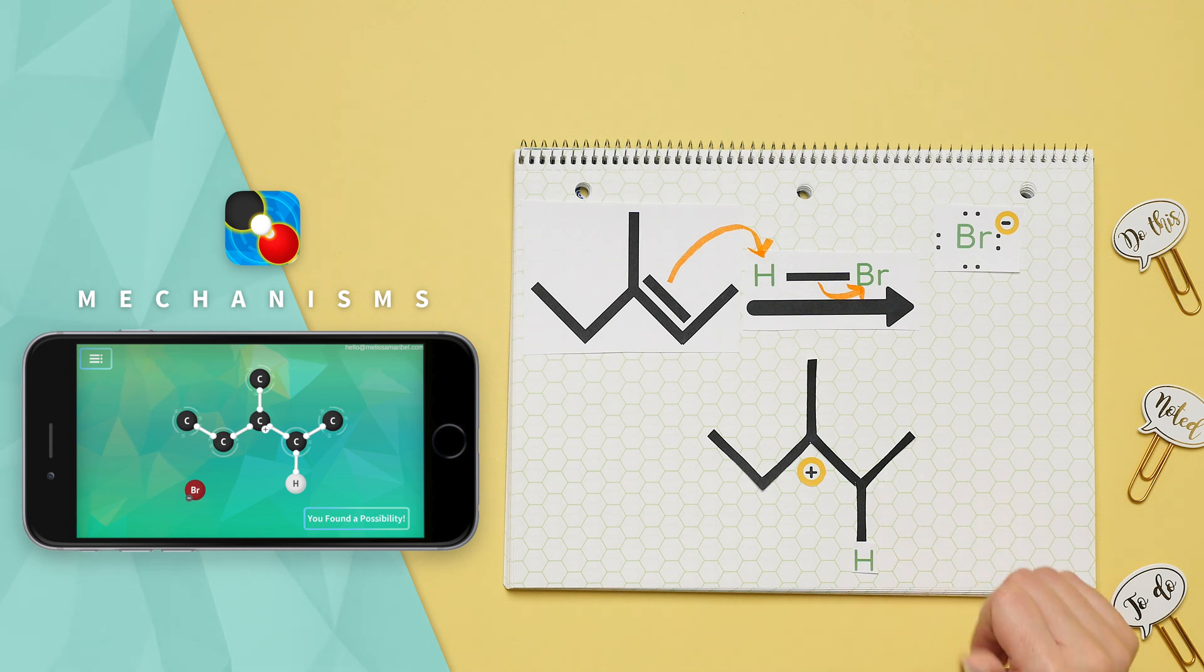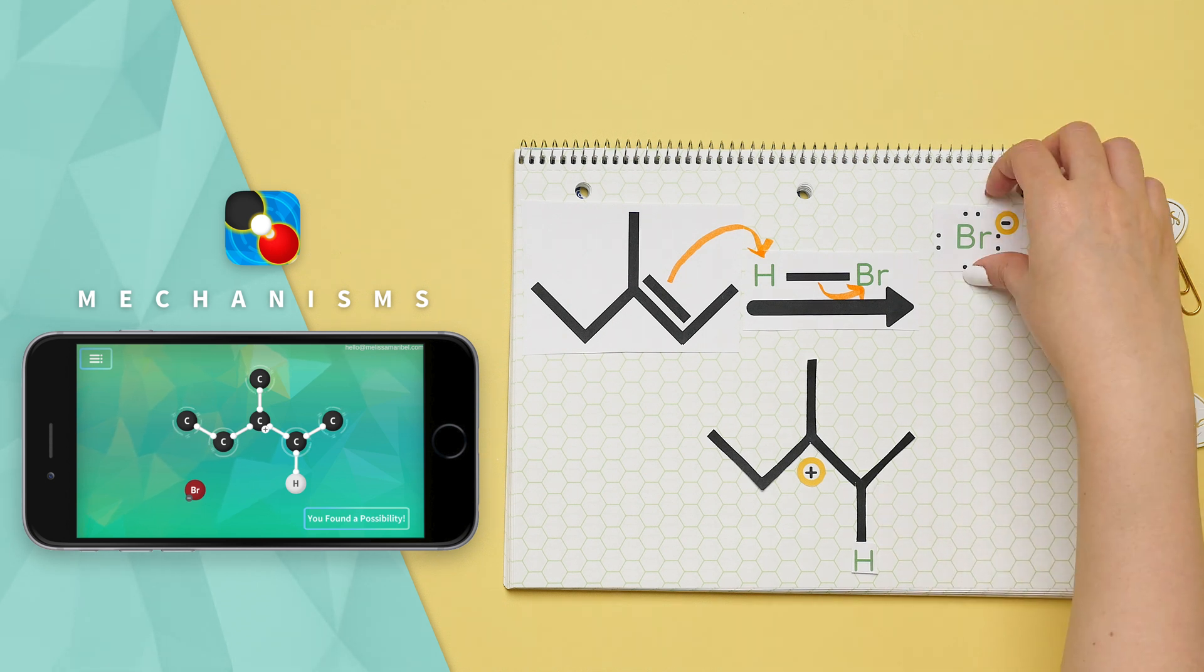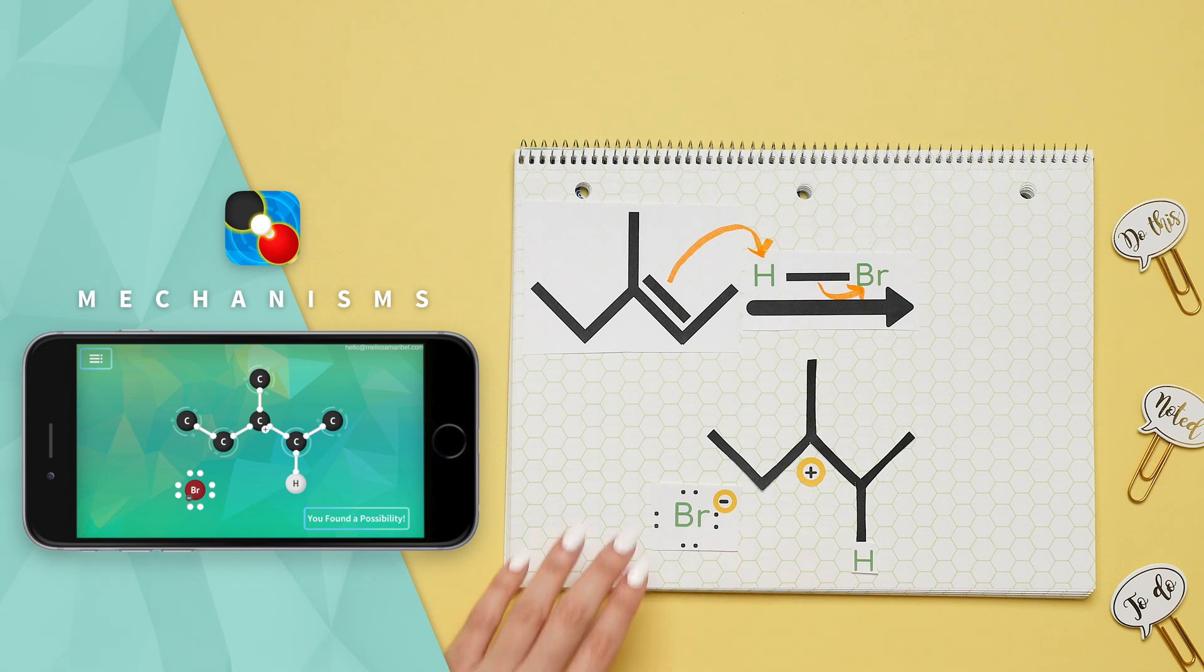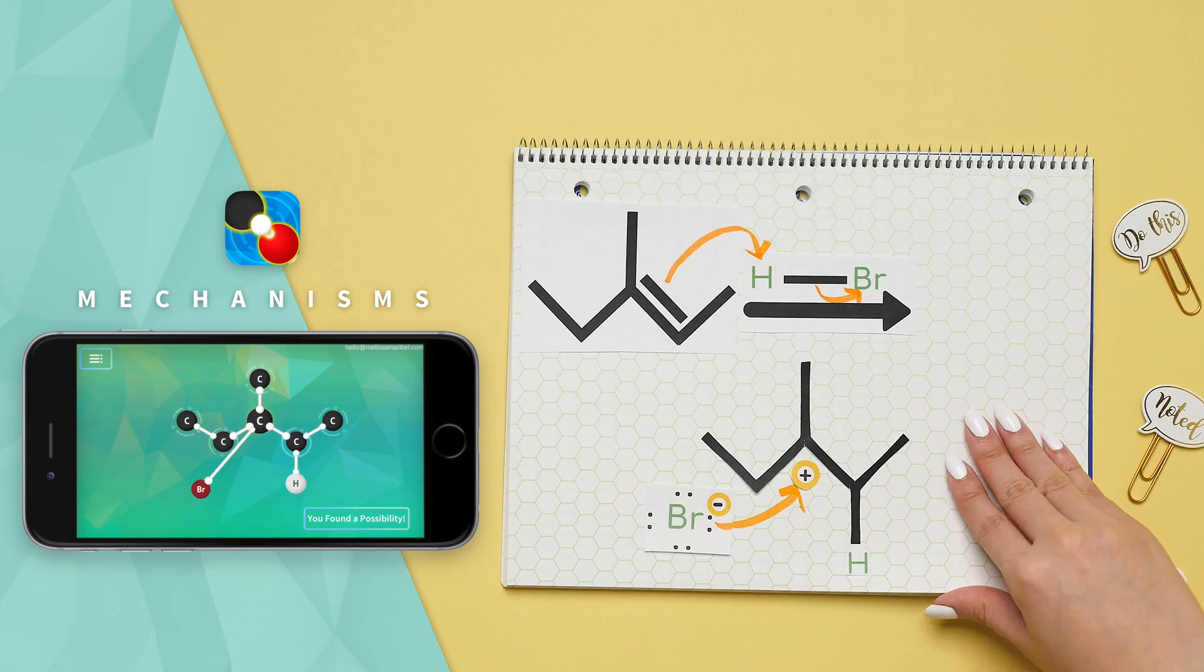Now that we have the correct carbocation step two is to have our nucleophile which is bromine attack the carbocation to form our product.